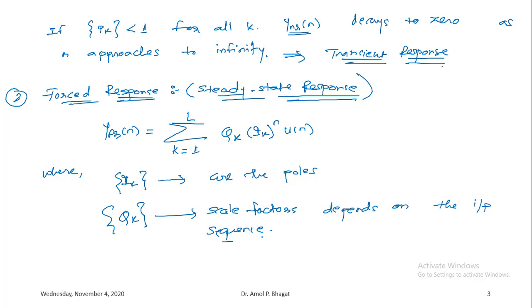The forced response, also called the zero state response, assumes initial conditions y(−1) and y(−2) are zero with only the input present. If all poles of the input signal fall inside the unit circle — that is |q_k| less than 1 for all k — then the forced response y_fr(n) decays towards zero as n approaches infinity, similar to the natural response.